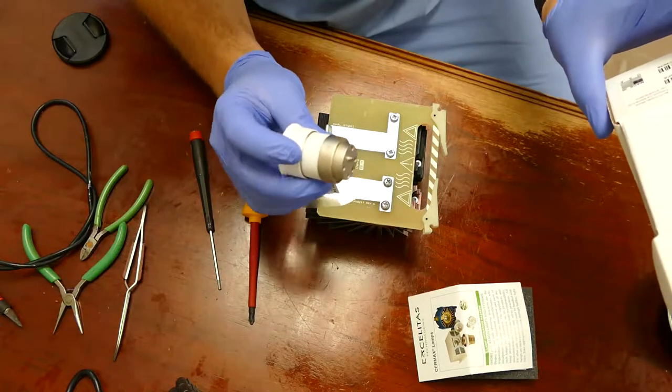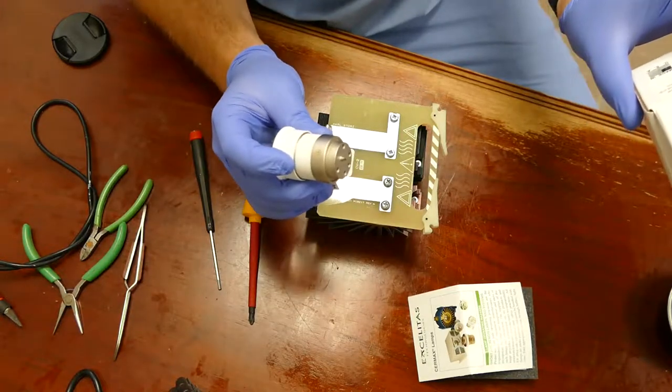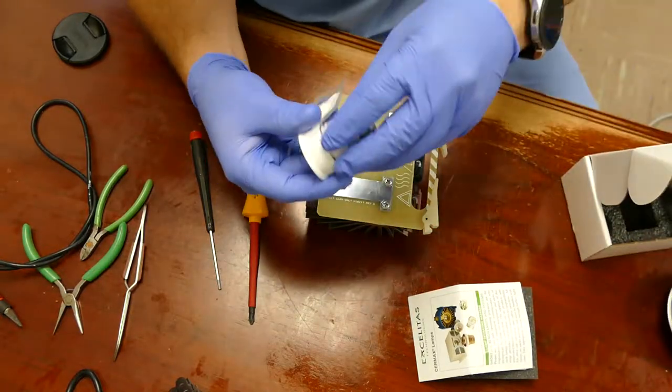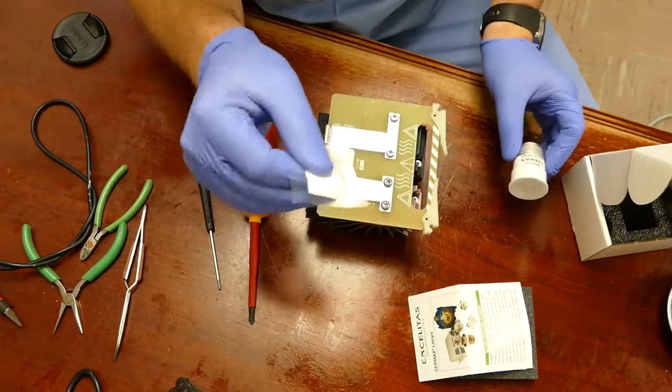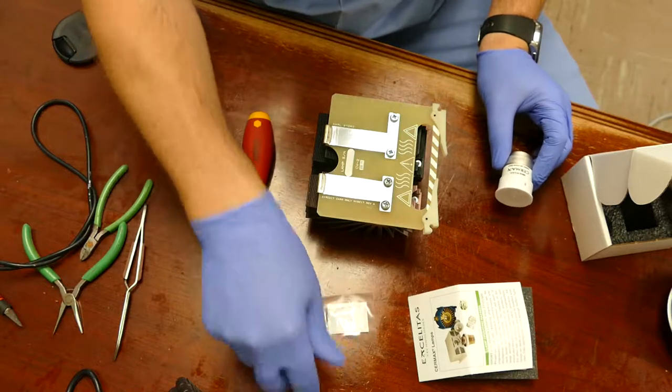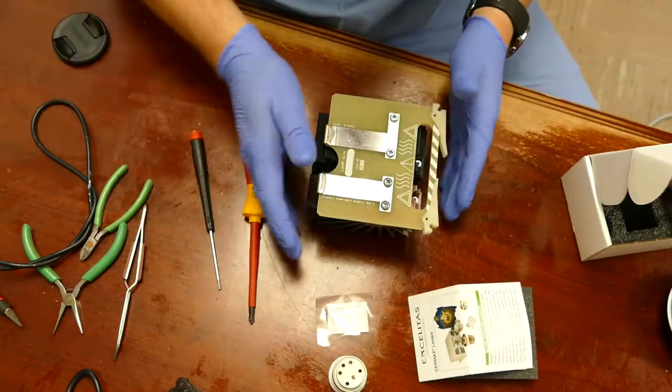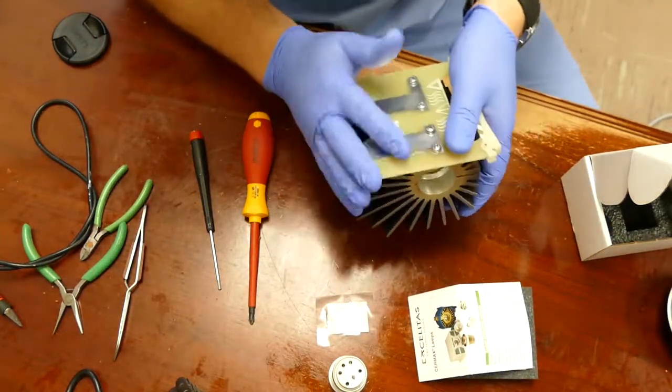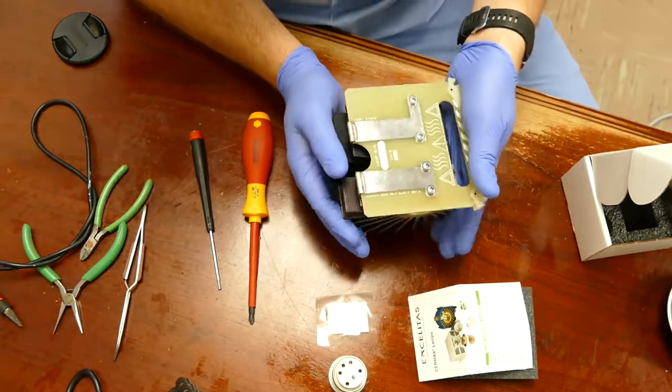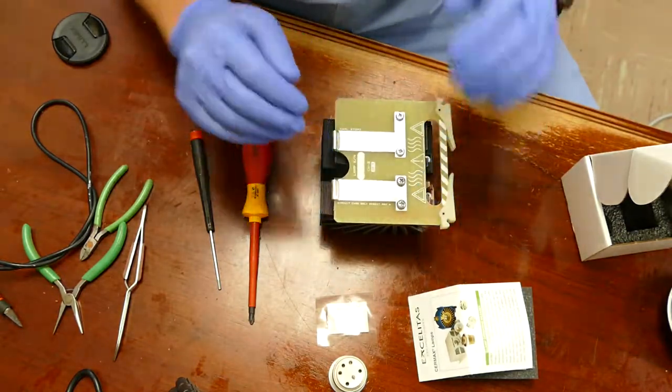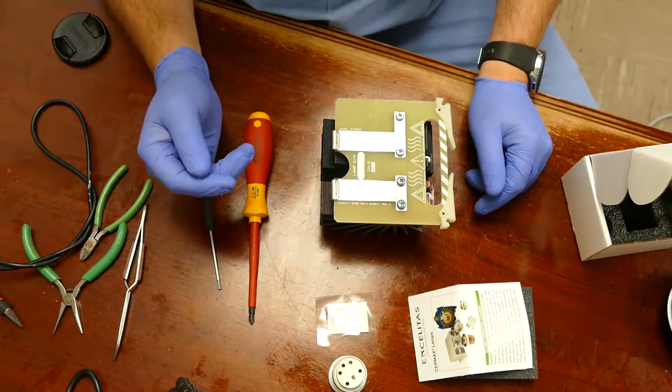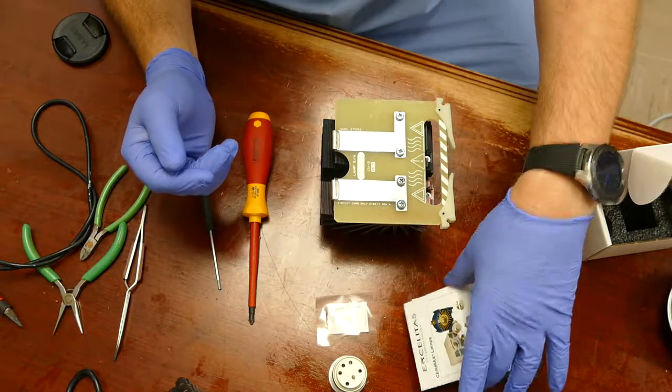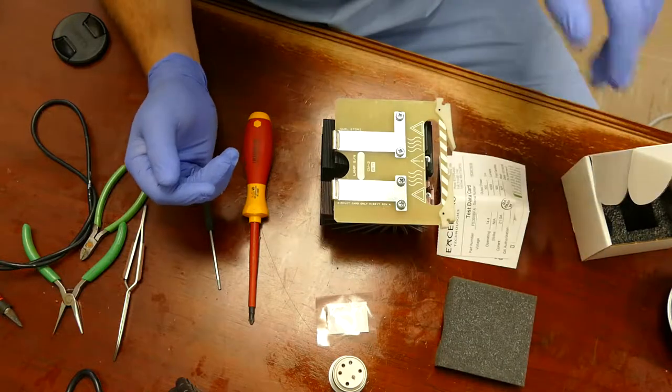This is an Excelitas PE300BFA Bulb, and it comes with a little bit of thermal conductivity paste. So we rebuild them, and most hospitals I believe do, but I often see people doing them wrong or making a complete mess, and that's why I'm making this video, because I'd like to try and get the record straight on how to rebuild these bulbs.